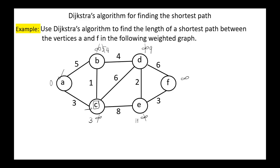Now we have unvisited vertices B, D, E, F. The vertex with minimum distance is vertex B; we mark it as the current node. B is connected to D with distance 4: 4 plus 4 equals 8, less than 9, so we relax this value to 8. B is connected to C, but C was already visited. We are done with B, so we mark it as visited.